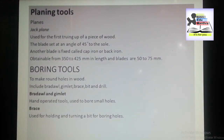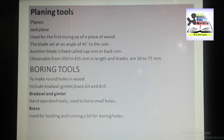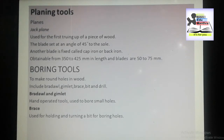The jack plane is the most common and is used for the first truing up and smoothening the surface of a wood piece. It consists of a block of wood into which a blade is fixed by a wooden wedge. The blade is set at an angle of 45 degrees to the sole.